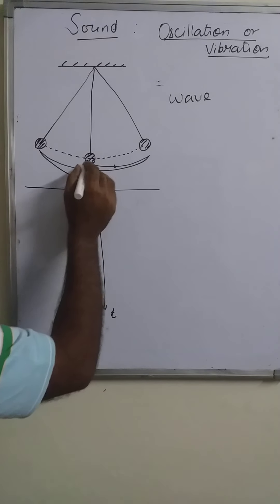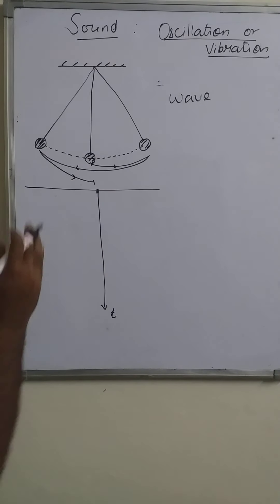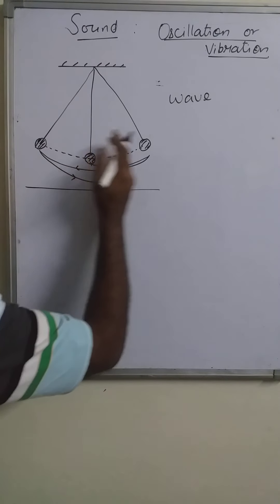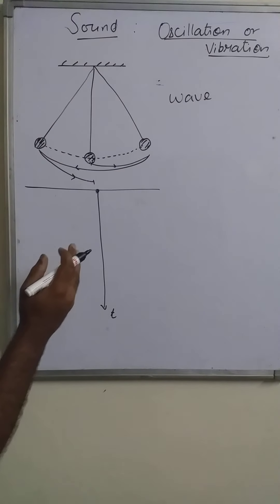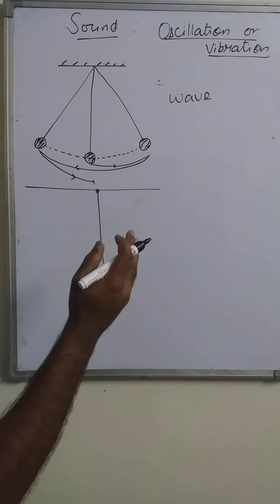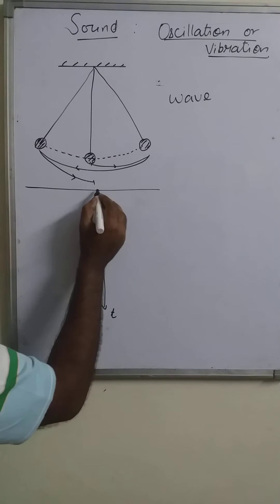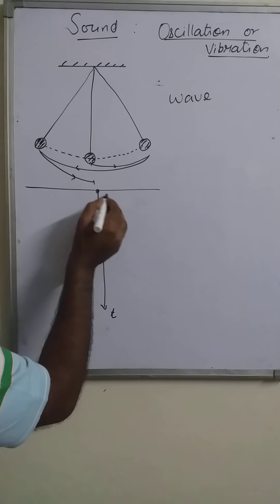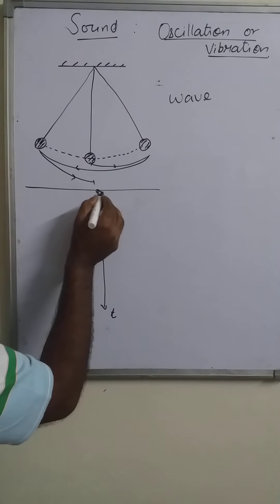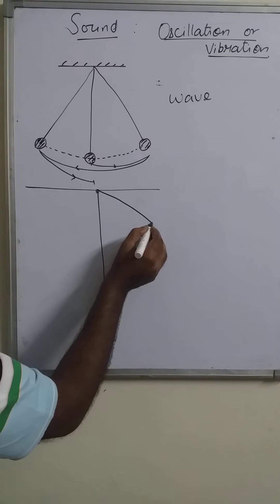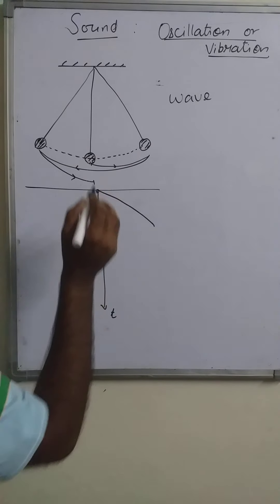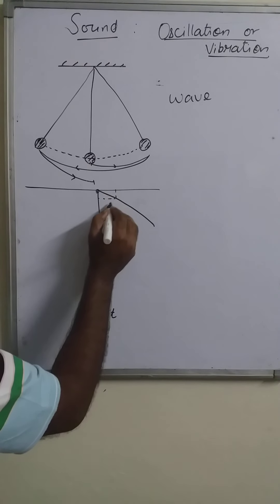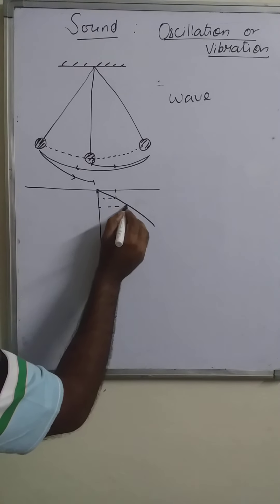At the mean position, the time is 0. When the bob is displacing from its mean position, the time also increases. So as time increases, position also increases. The graph will be drawn like this because both time and position are increasing together.